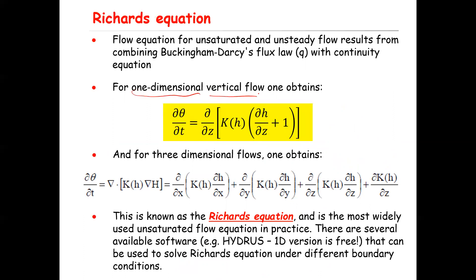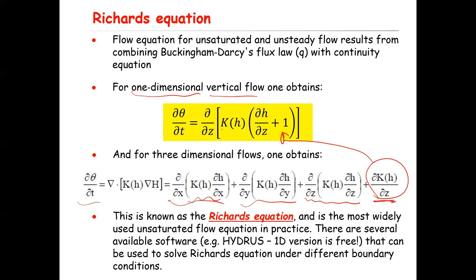We can also write this in three-dimensional form. In that case, the derivative of water content with respect to time equals the derivative with respect to x of K(h) times dh/dx, plus the same term for the y direction, plus the derivative with respect to z of K(h) times dh/dz, and additionally the derivative of the unsaturated hydraulic conductivity K(h) with respect to z. That last term comes from the gravity contribution — since K(h) times one is K(h), its derivative with respect to z accounts for gravity.